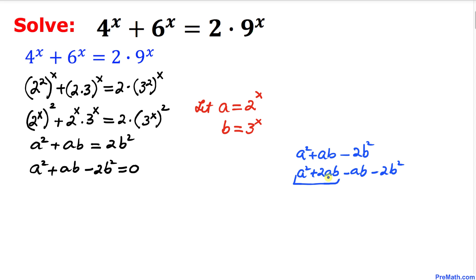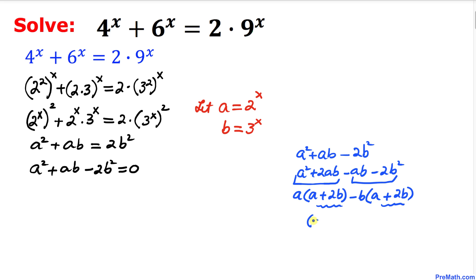Focusing on the first pair, we factor out a to get a(a + 2b). From the second pair, we factor out negative b to get -b(2b + a), which is -b(a + 2b). So the full factored form is (a + 2b)(a - b).